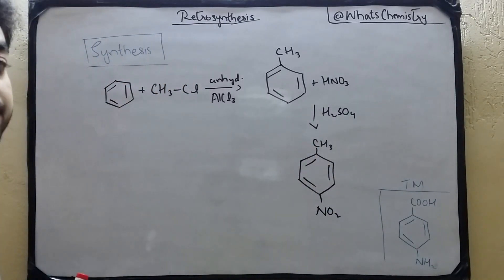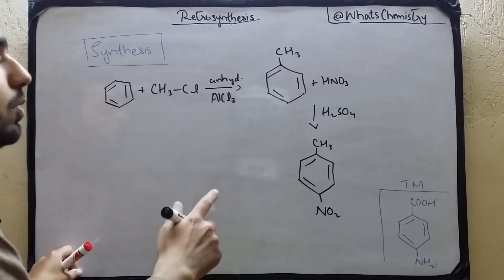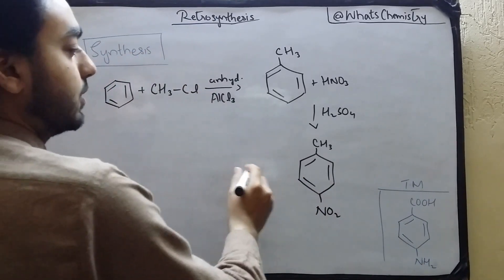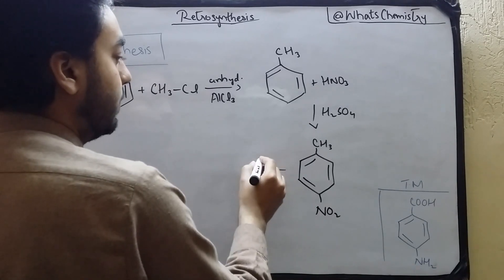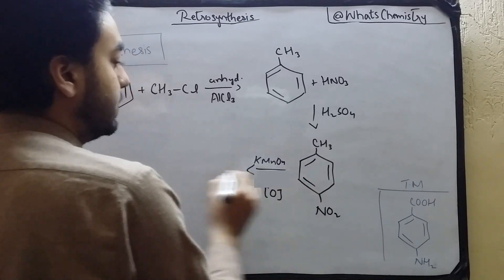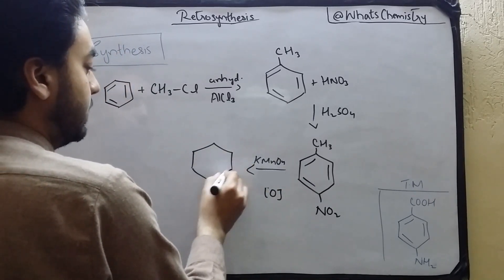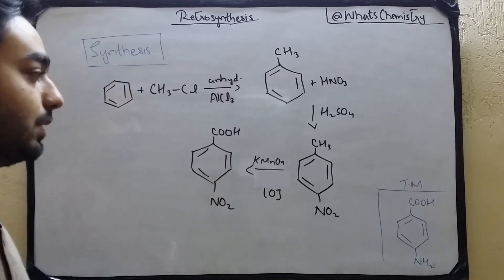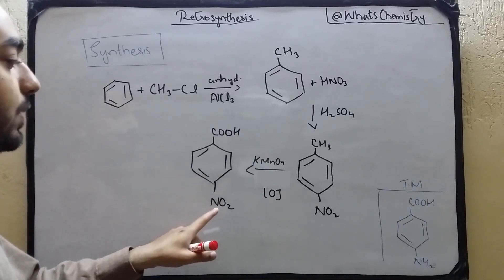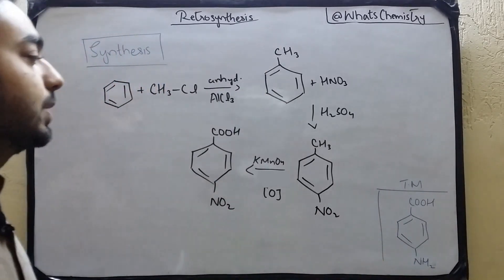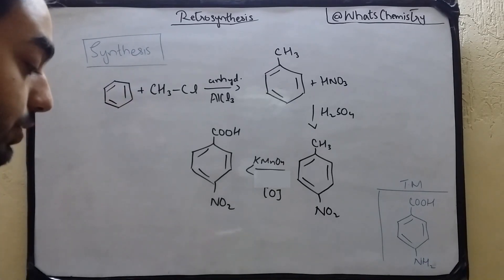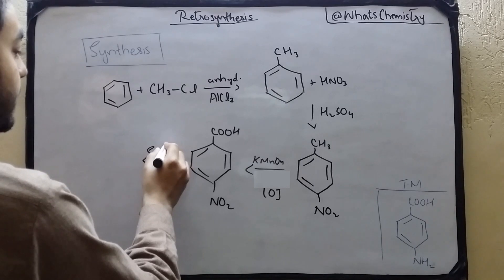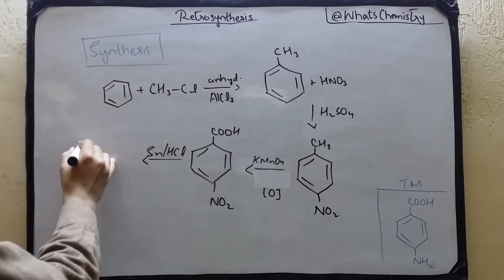In the next step we perform oxidation — the methyl group is converted into a carboxyl group (COOH) by adding KMnO4. The NO2 remains as it is. The last step is to convert the nitro group into an amino group — we perform reduction by adding tin (Sn) and HCl.